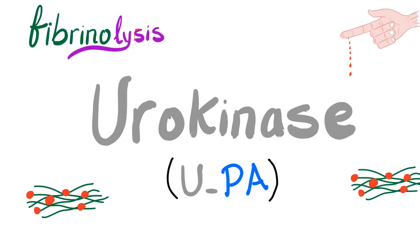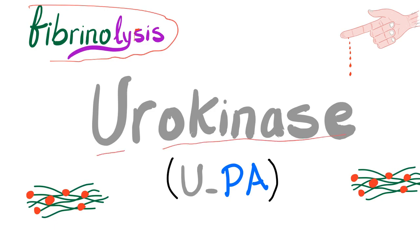It's Medicosis Perfectionals once again, continuing our series about bleeding and coagulation disorders. In the previous videos, we started talking about fibrinolysis. In the last video, we talked about streptokinase. Today, we'll talk about urokinase type plasminogen activator, also known as urokinase, or UPA.